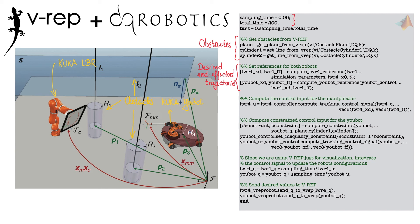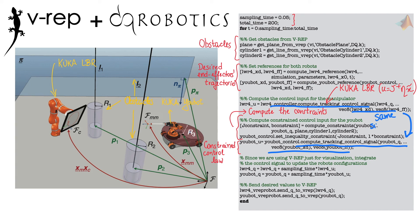We now compute the control input for the KUKA LBR. This control law is based on the pseudoinverse of the Jacobian matrix. The control law for the mobile manipulator deals with constraints. So, first, we compute the constraint and set the controller inequalities. Now, we can compute the constrained control law. Notice that the method has the same signature as the controller based on the pseudoinverse of the Jacobian matrix.